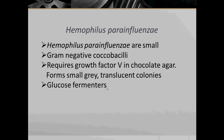The next bacteria is Haemophilus parainfluenzae. Haemophilus parainfluenzae are small Gram-negative Coccobacilli. They require growth factor V in chocolate agar. Chocolate agar is used because it can support the growth of fastidious respiratory bacteria, mainly due to the fact that the heat inactivates enzymes which would otherwise degrade NAD, which is actually factor V. Haemophilus parainfluenzae forms small grey translucent colonies and are also glucose fermenters.